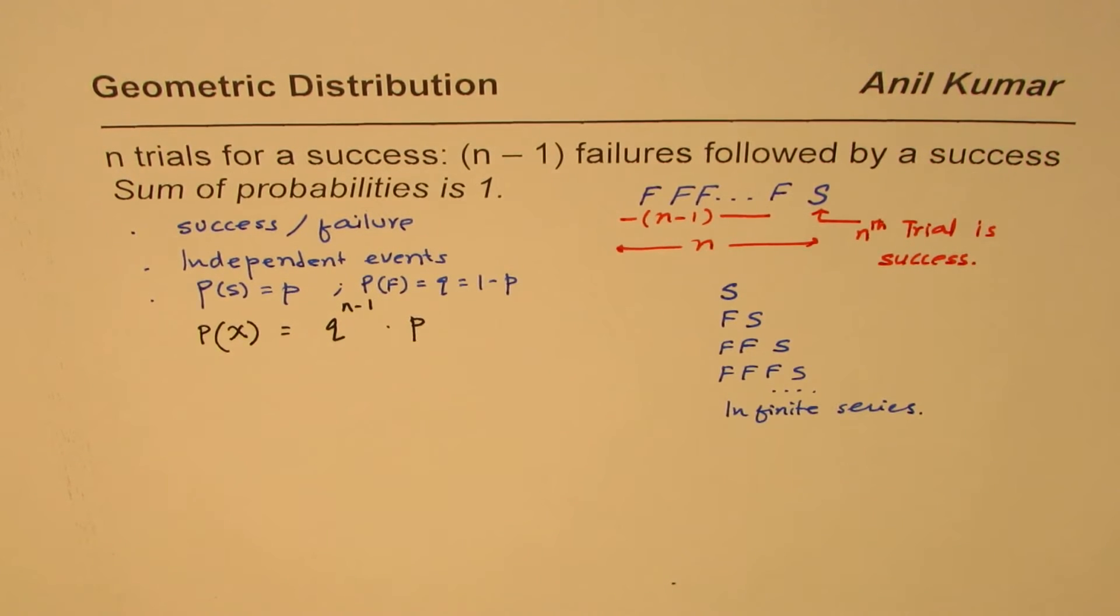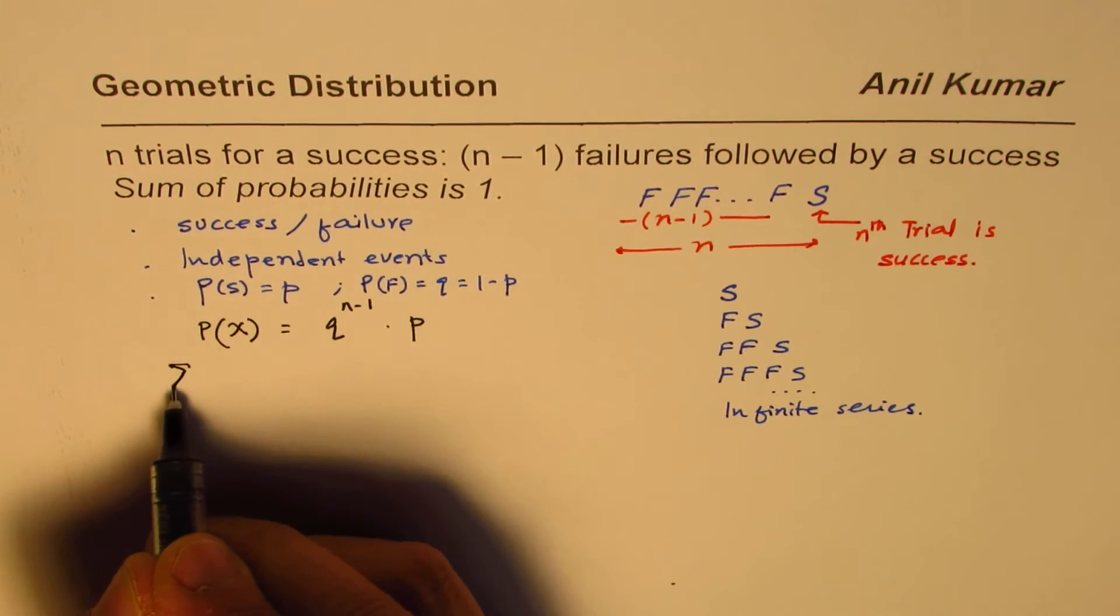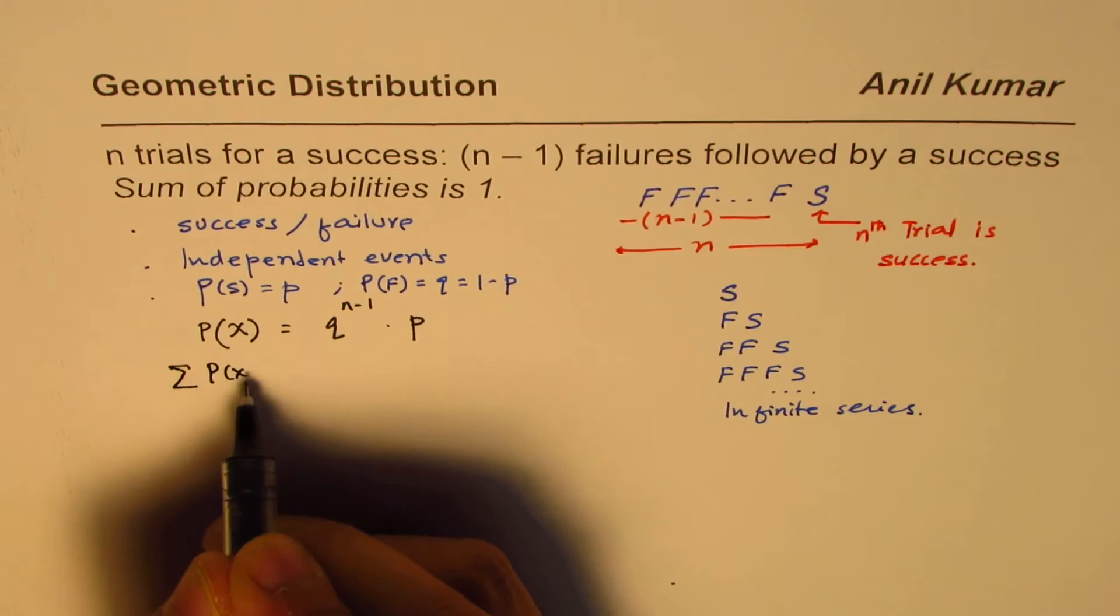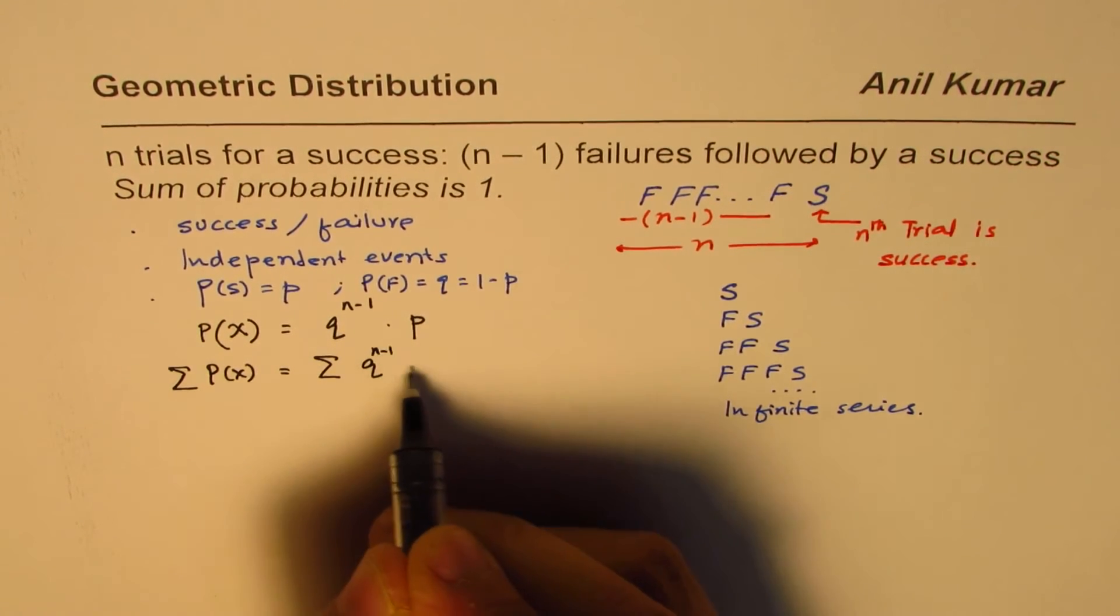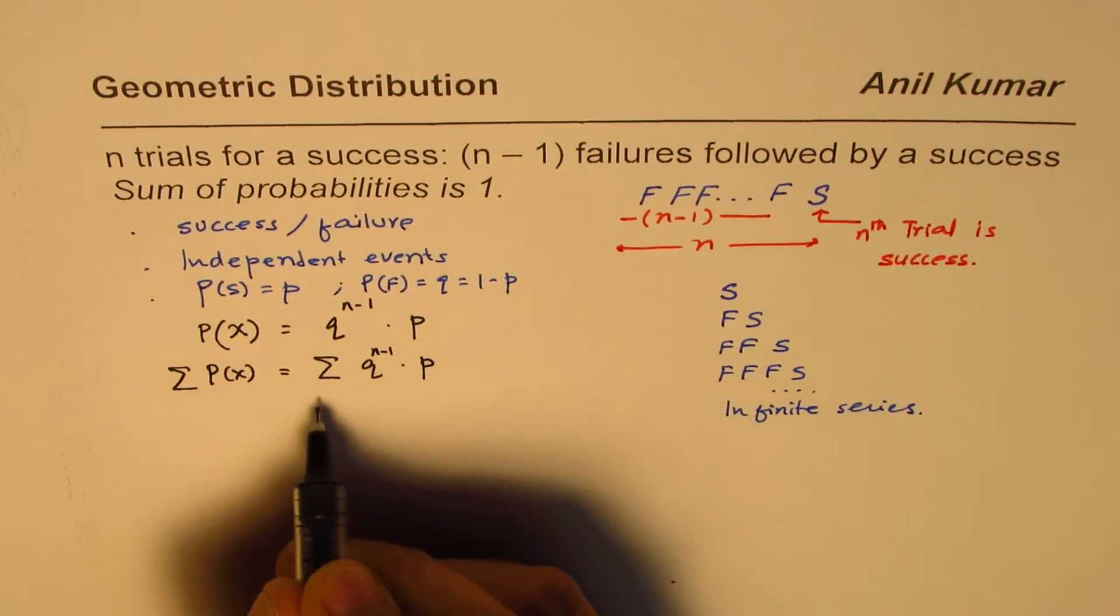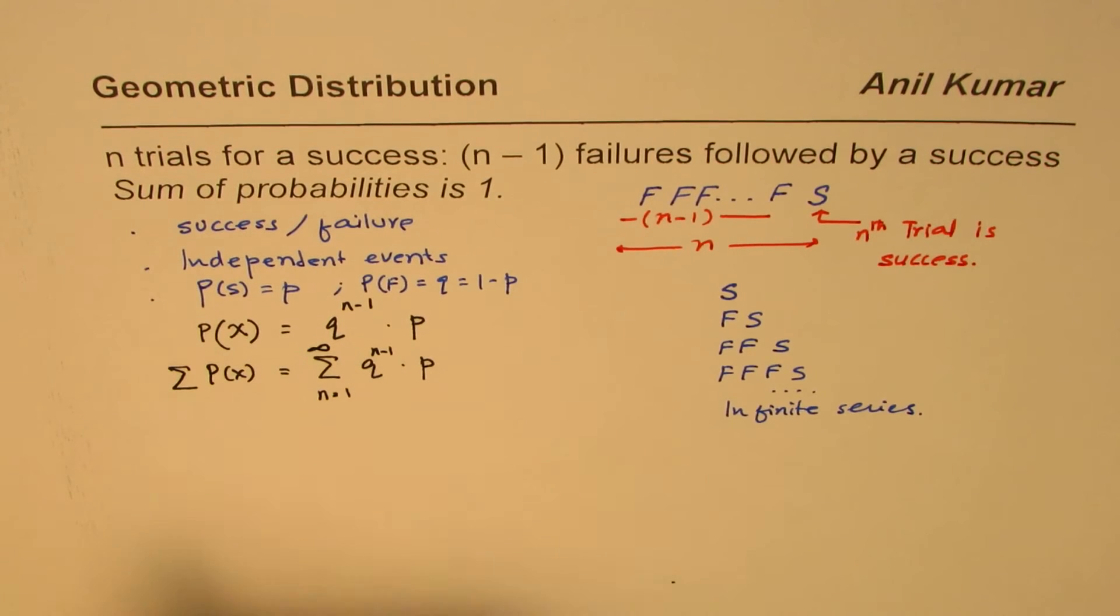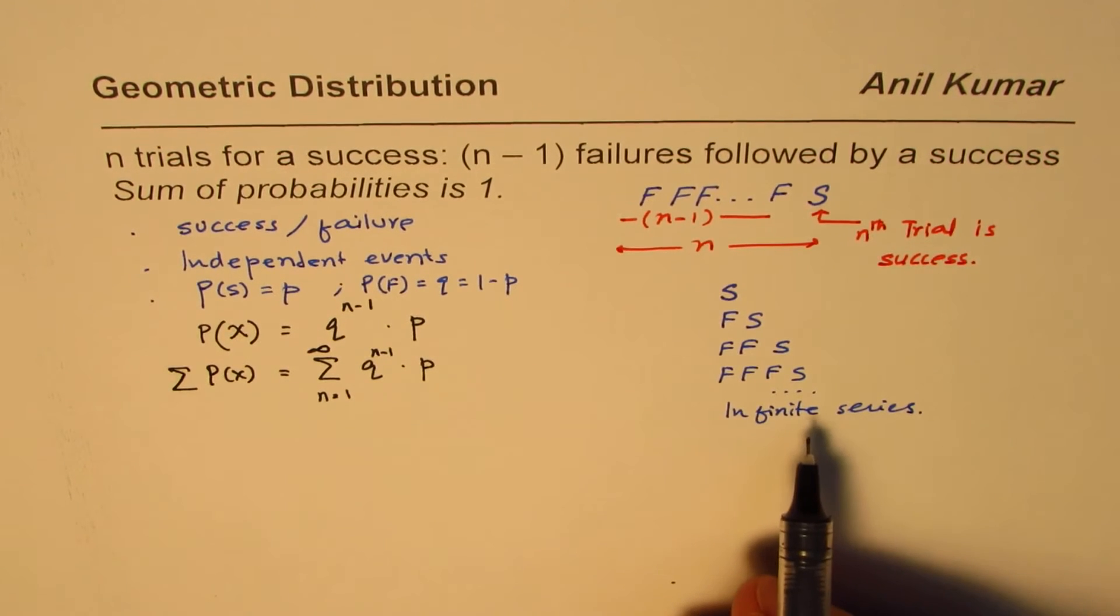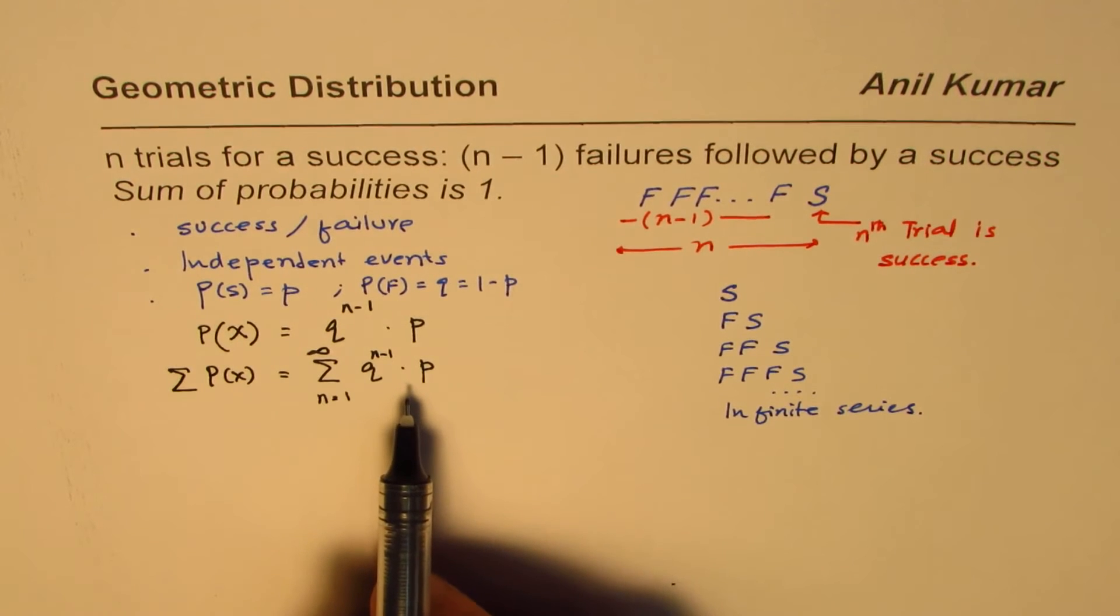So if we do sum of all the probabilities, that means sum of all these values, that is sum of q to the power of n minus 1 to p, where n is all the natural numbers from 1 to infinity. Since it could be an infinite series. So that becomes the sum of all the probabilities.